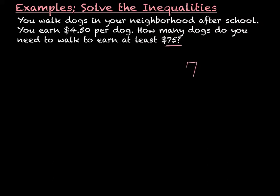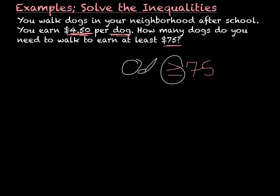We want to earn seventy-five dollars, so that is my total, and we want to earn greater than or equal to that — it could be exactly seventy-five dollars or more. Now I have to do something with the dogs. I make four dollars and fifty cents for every dog I walk. If it's one dog, I get four fifty; two dogs, four fifty times two; three dogs, times three. So I multiply: four fifty times D is greater than or equal to seventy-five.